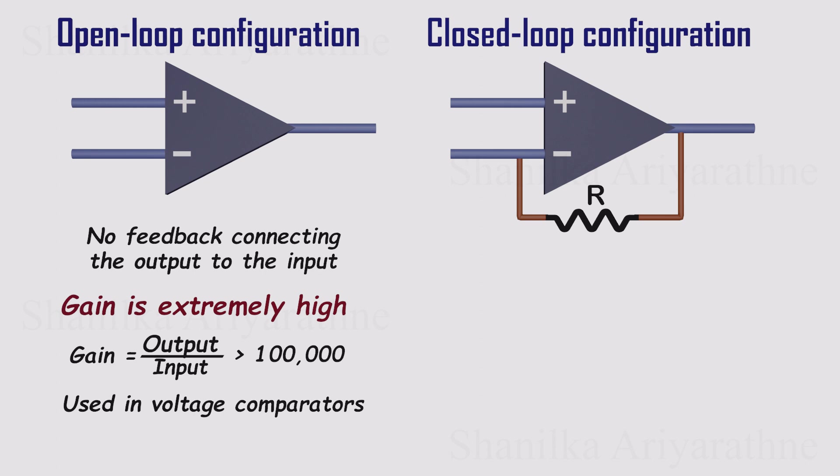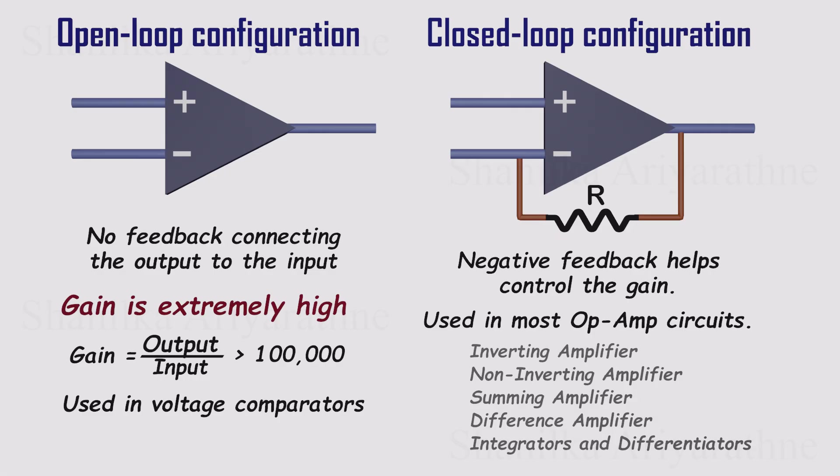But most real circuits use closed loop, with negative feedback through resistors. This feedback reigns in that massive gain, keeps the circuit stable, and makes the op amp behave in a nice linear way.